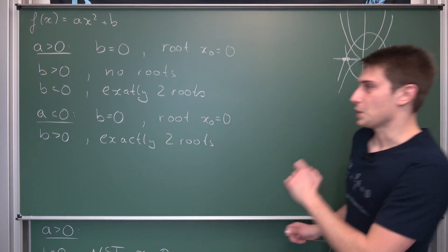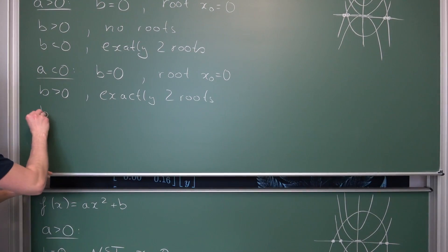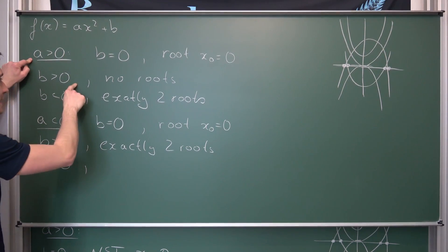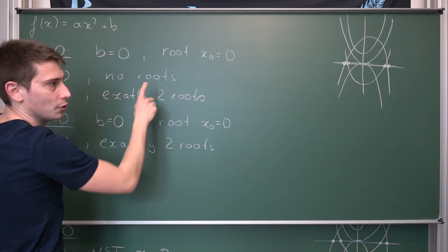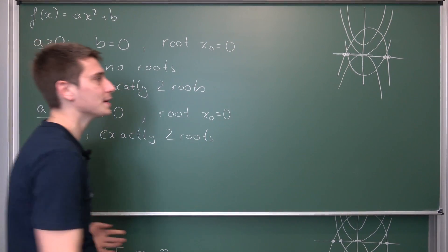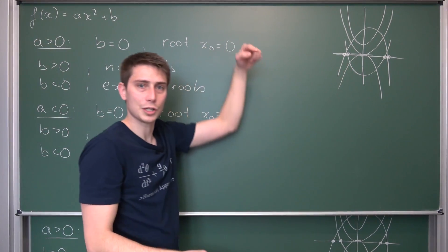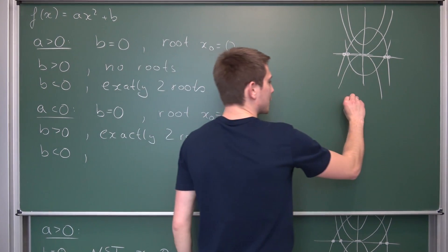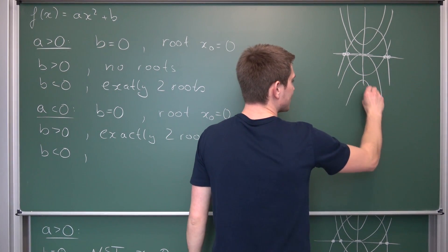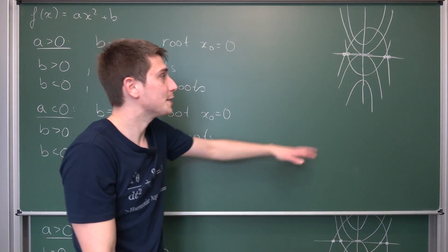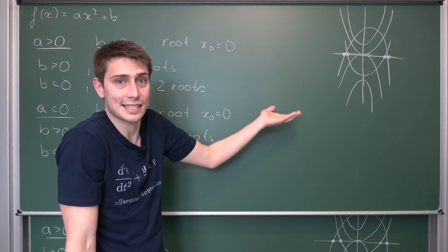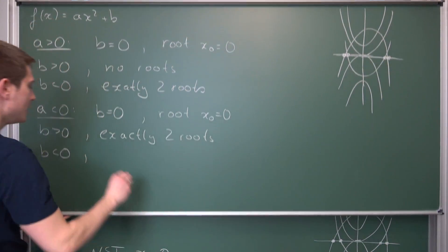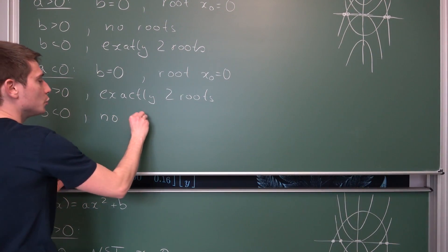What about the last situation, b less than zero with a < 0? If a and b had the same signs, we didn't have any roots at all. Does this apply here too? We take a parabola open in the downward y direction and shift it further downward in the negative y direction. We can have a parabola like this — and once again, we do not have any real roots at all. We are not cutting through the x-axis, so no roots.